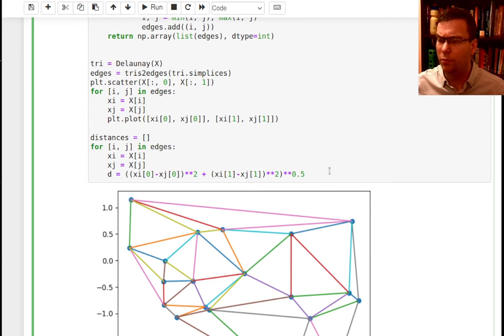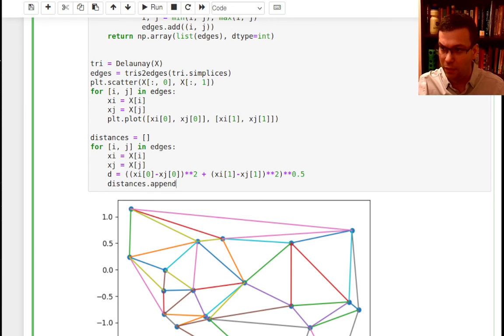Actually, if you're computing the minimum spanning tree, it doesn't really matter so much to do the square root. Is that true? No, I guess, no, I do. I'm sorry. I do want to do the square root. Yes. Okay. Anyway, then I would say distances.append d.